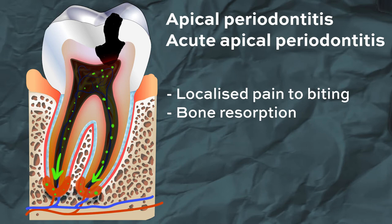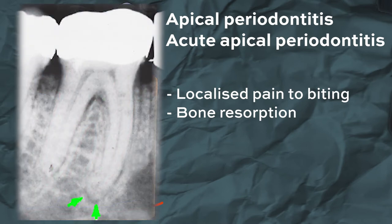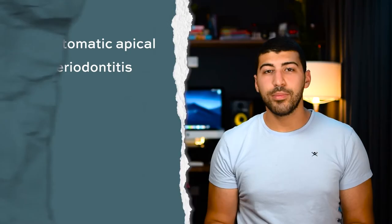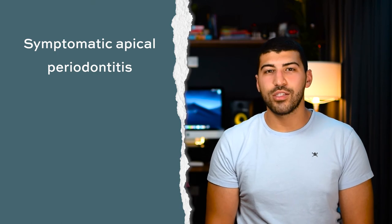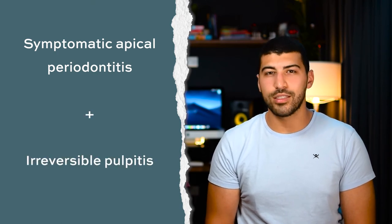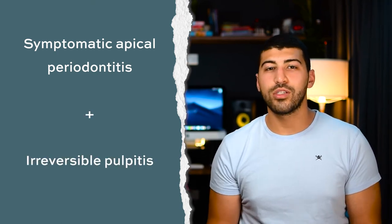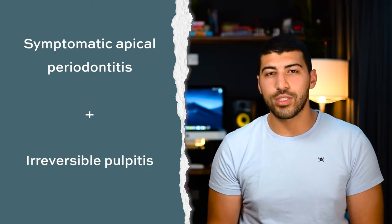If enough bone resorption occurs, this will be seen on the radiograph as an apical radiolucency. Symptomatic apical periodontitis often presents with symptoms of irreversible pulpitis as well, because this is all a dynamic process.